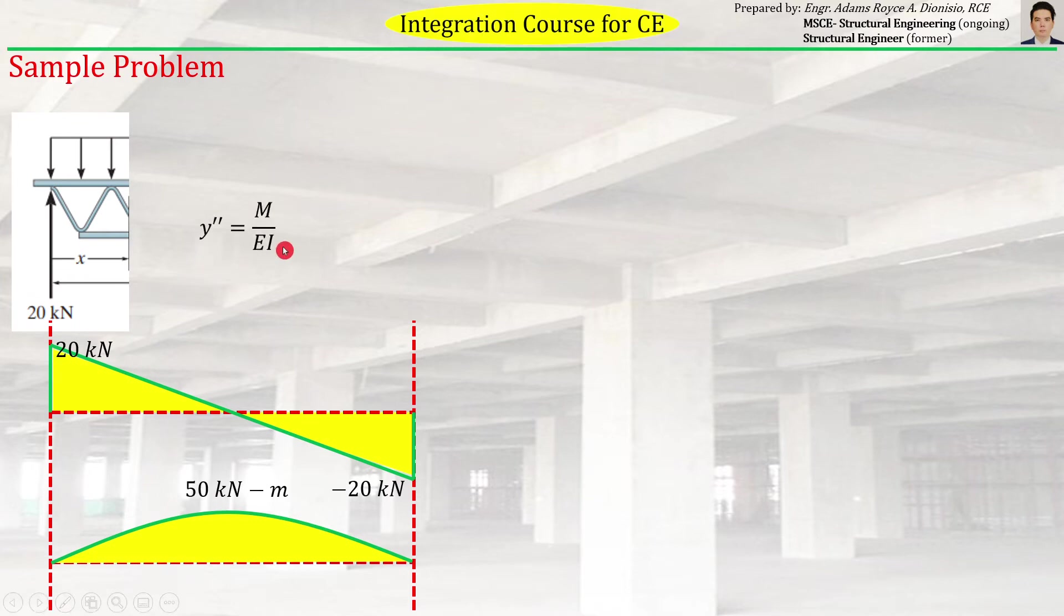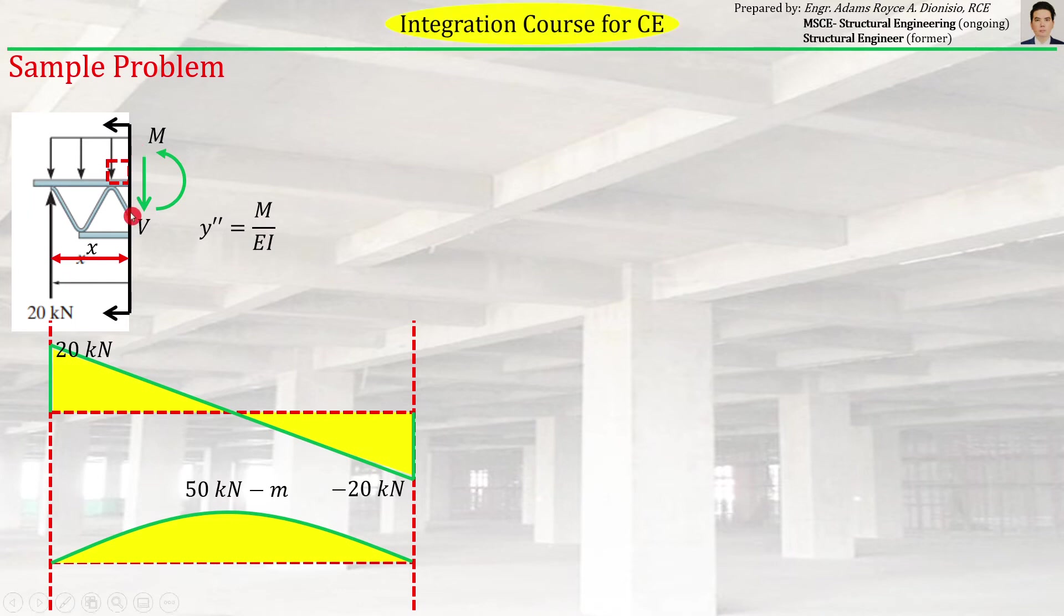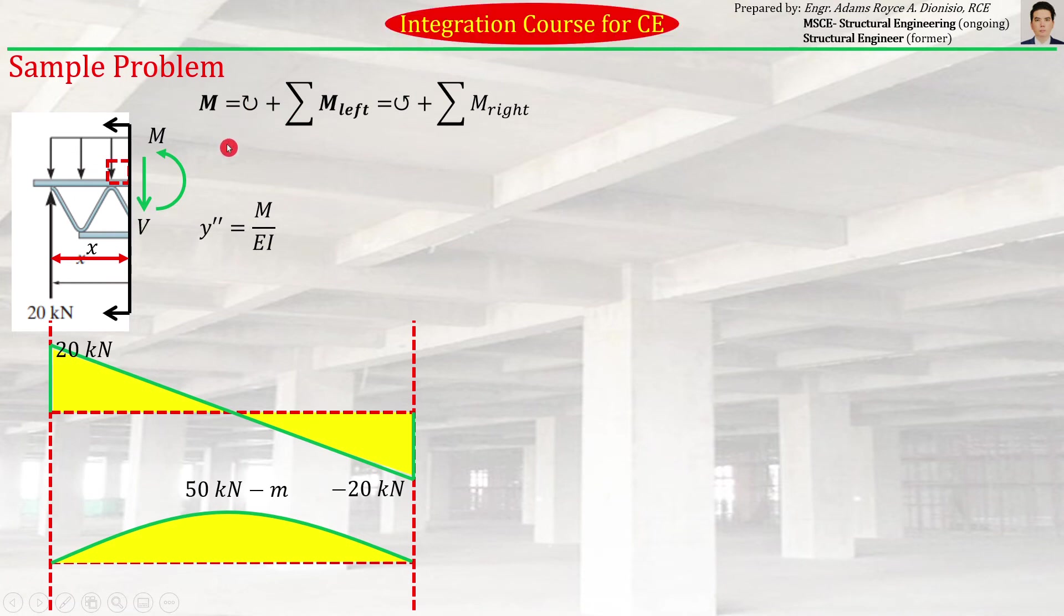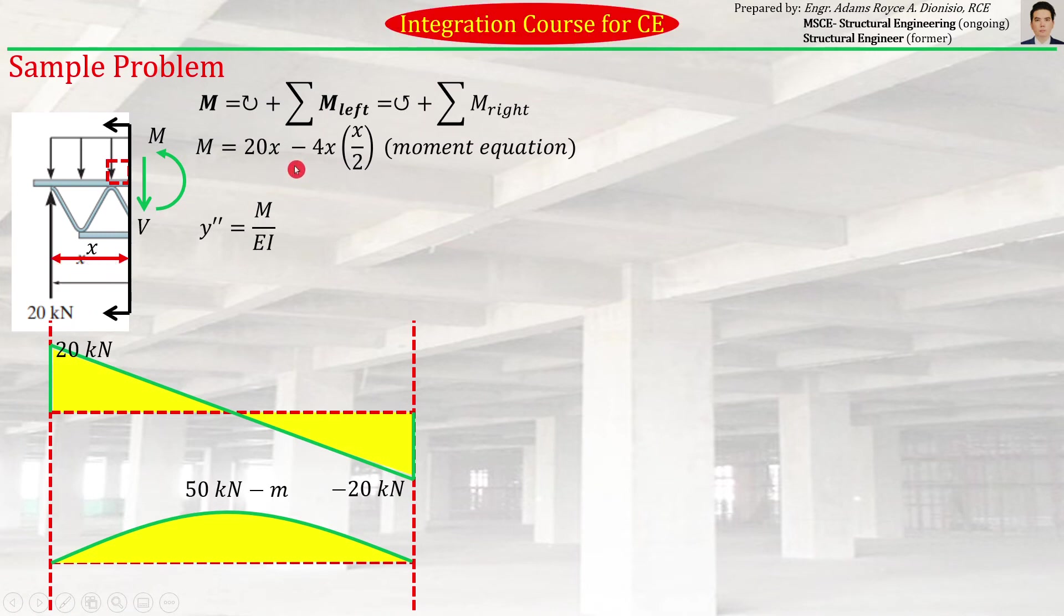How do we get that midspan deflection? We just have to produce the moment equation first, coming from that relationship. To get the moment equation, we can just cut the beam at a certain point, say here, at a distance x from the left end. When we cut it, internal forces—moment and shear forces—will appear. The moment equation is just summation of moments on the left or right. In this case, summation of moments on the left side of the cutting plane. The moment on the left side is the 20 kN force multiplied by the moment arm x, minus 4 times x times the moment arm x/2. That is the moment equation.